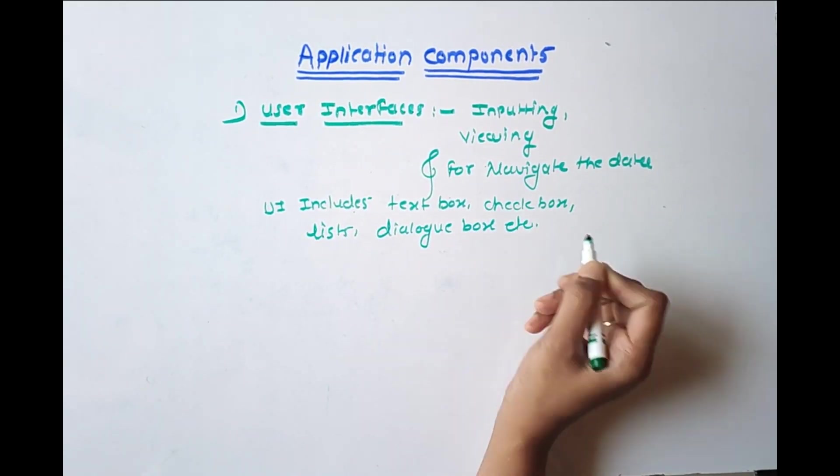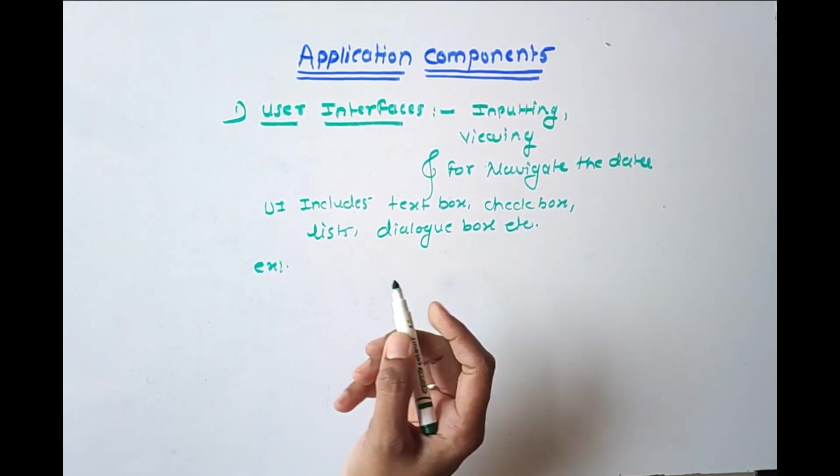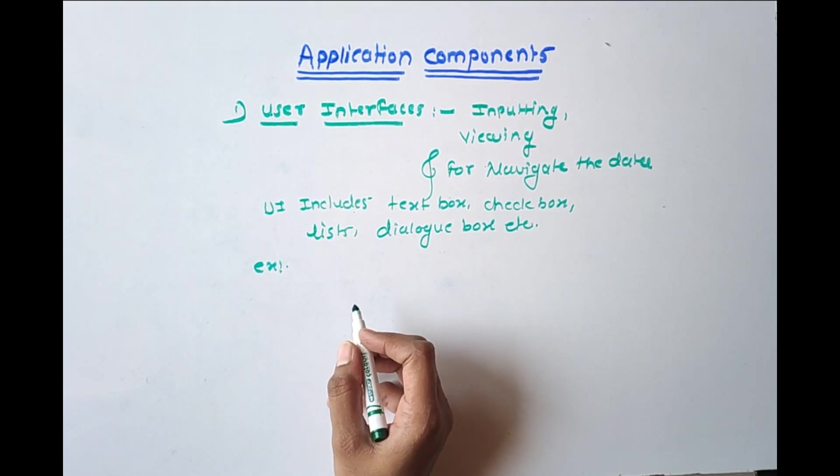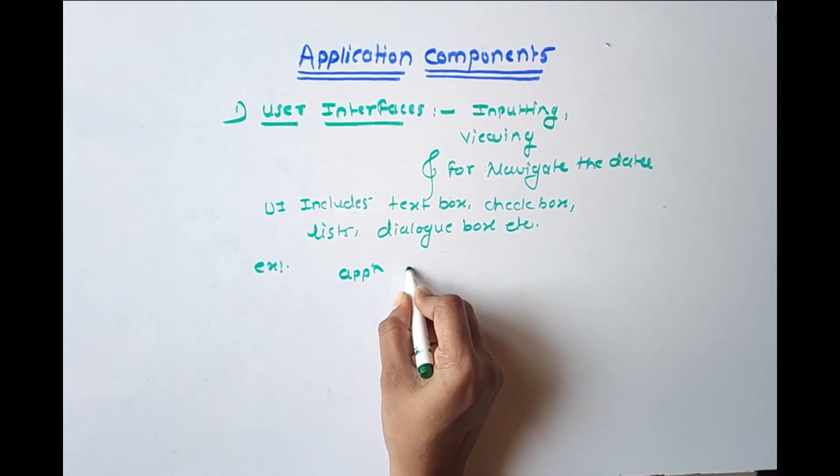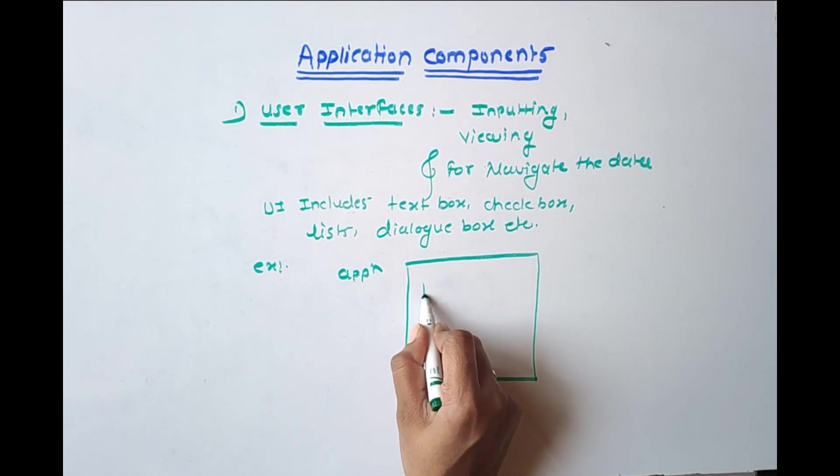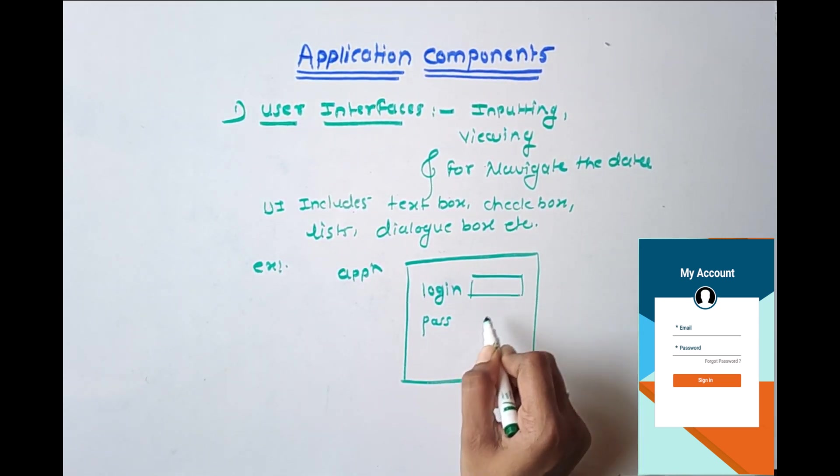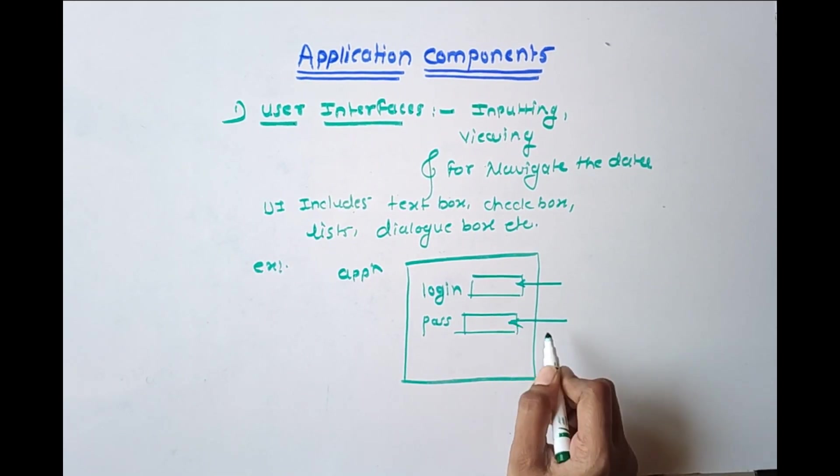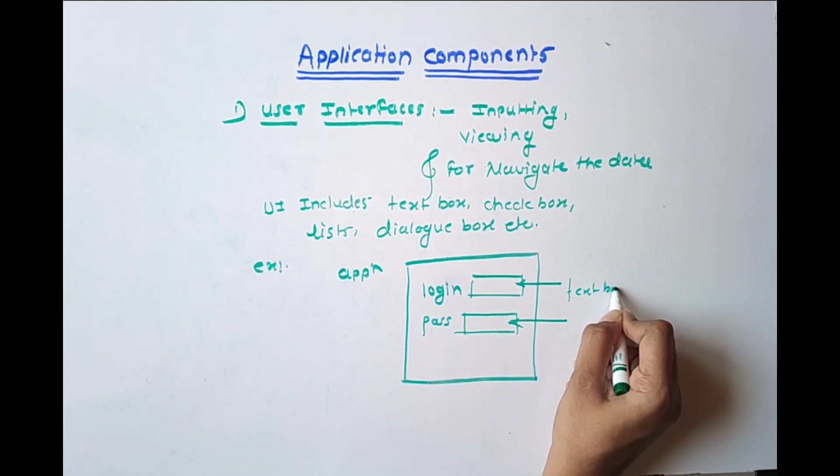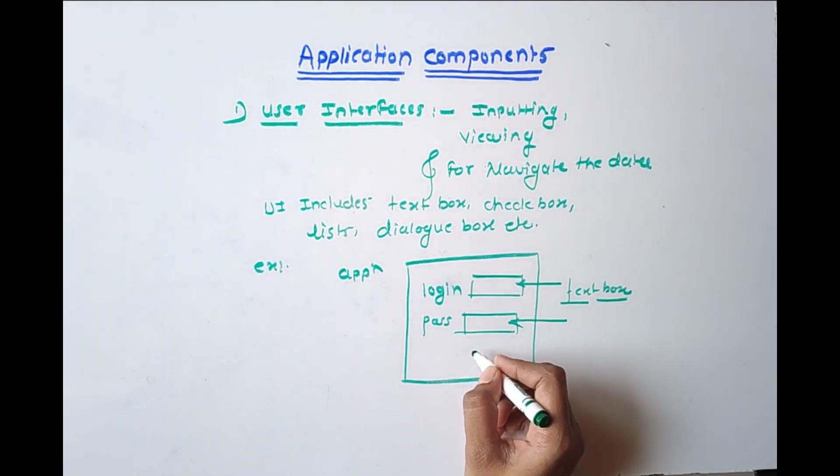So what is interface? Basically it is a communication of user with the application. We'll take one example. Suppose if we have to login into the application, application asks us for the login, so there is a login and password. We are inputting some data into this box and that box is called as text box. So we are communicating with the application through text box. That means this is a user interface.